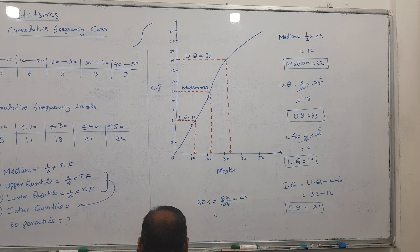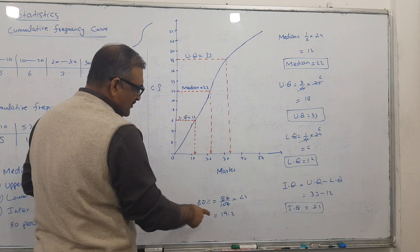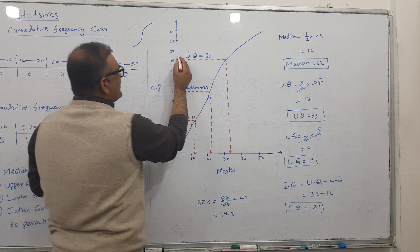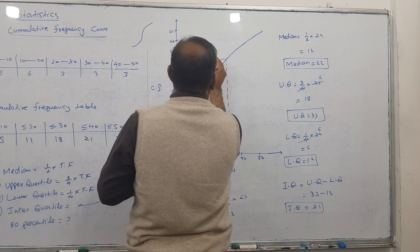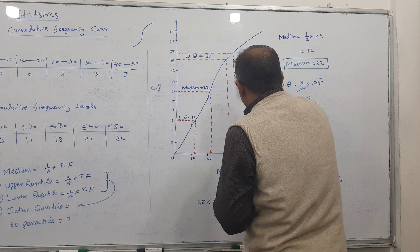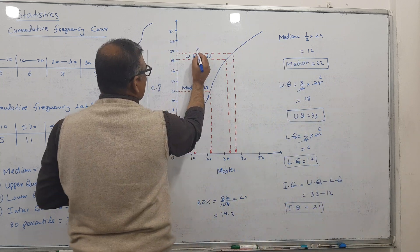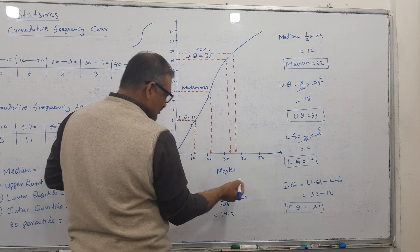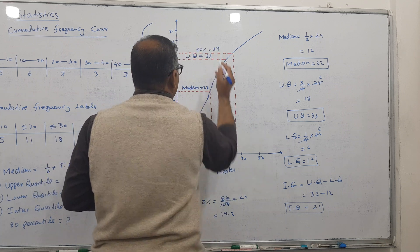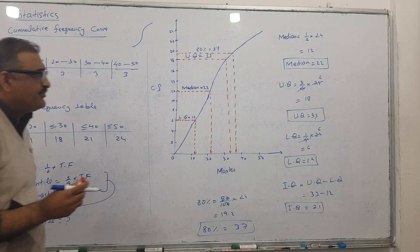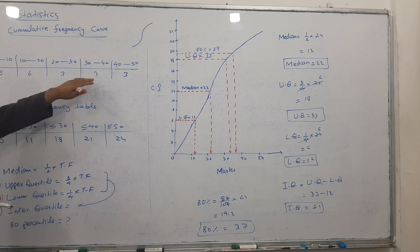The answer is 19.2. So 19.2 is the pointer — slightly above 19 on the y-axis. Go across to the curve and come down. The answer is approximately 37. So the 80th percentile is equal to 37.